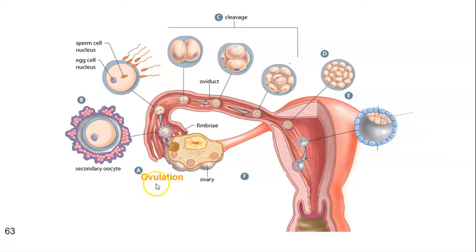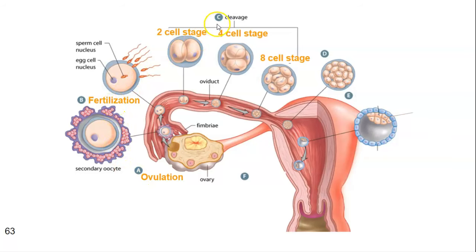The reason it's putting out progesterone is to maintain the lining so that we can have implantation. So at day zero — at ovulation — we have our oocyte, or our ova. At day zero we have fertilization. Fertilization then goes through that two to four to eight cell division called cleavage. In your notes, you have labeled part A and part B as ovulation and fertilization. You now need to label part C as cleavage and then label each of these stages of cells.